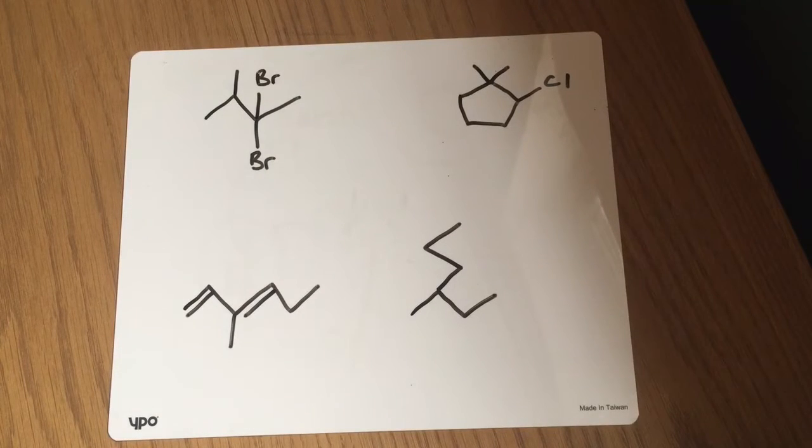So we know we've got those little locant or locator numbers inside some organic chemistry names, but assigning them can be a little tricky sometimes. What you've got to remember is you've got to achieve the smallest combination of numbers possible for that particular molecule's name.